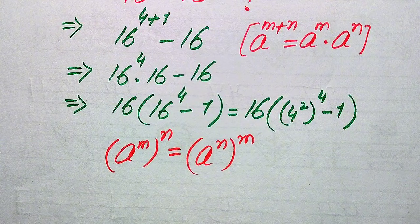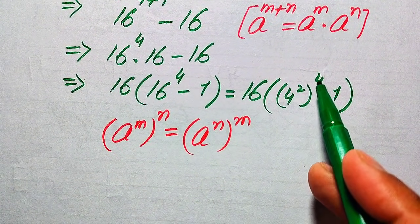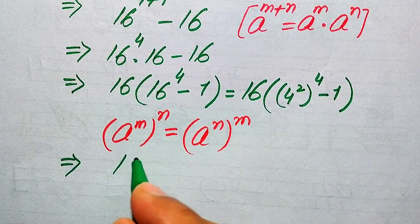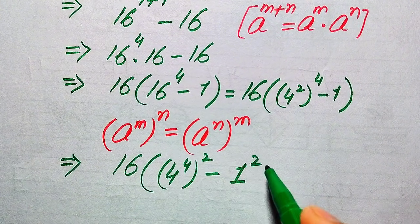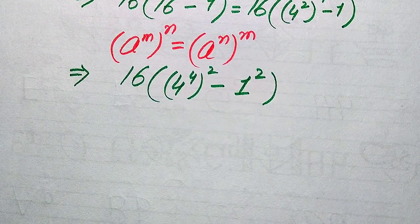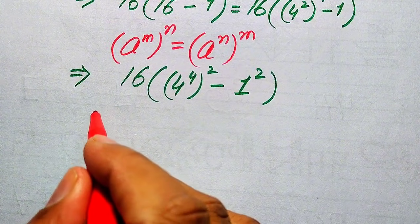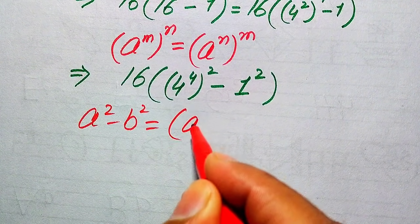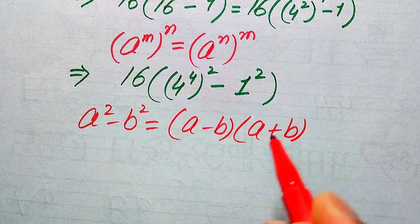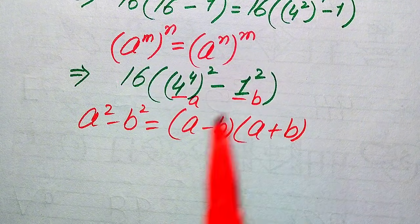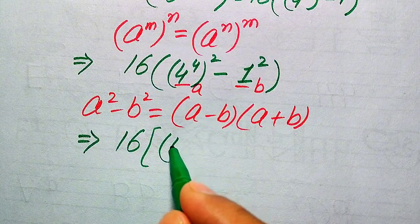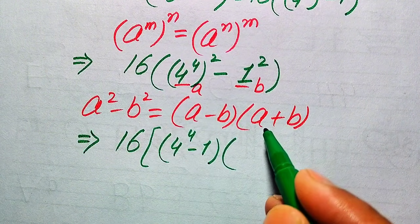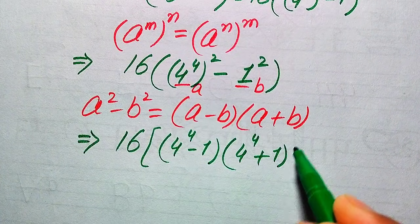We interchange the two exponents, so it becomes 16 times 4 to the power of 4, whole squared, minus 1 squared. Now we use the algebraic formula: a squared minus b squared equals a minus b times a plus b. Here the base of the first term is our a and the base of the second term is our b. So we write it as 16 times (4 to the power of 4 minus 1) times (4 to the power of 4 plus 1).